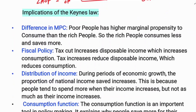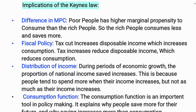Next we will see the implications of the Keynesian law of consumption. The first implication is the difference in marginal propensity to consume. Poor people have a higher marginal propensity to consume than rich people. Rich people consume less and save more, so an increase in income for lower-income people has a larger consumption effect.